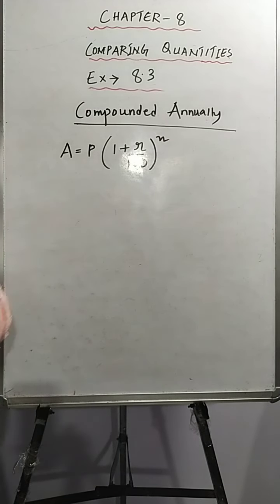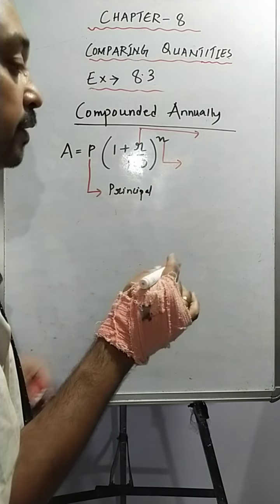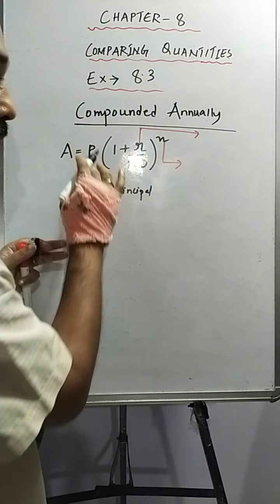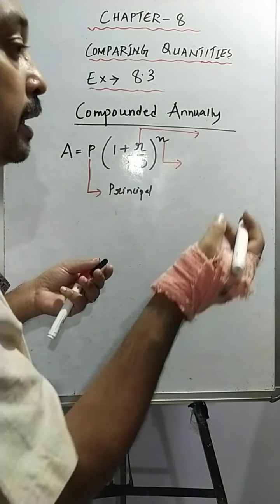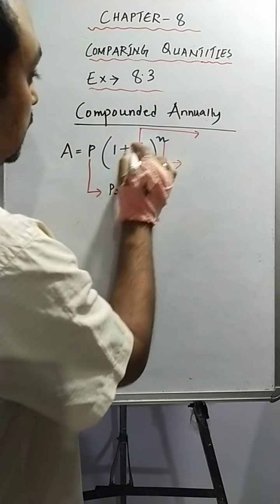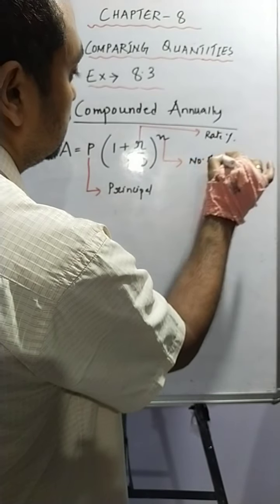Here P is principal, r is rate percent, and n is number of years. Principal is the amount we take as a loan from a bank or from anybody, or money which you deposit anywhere — in both cases that amount will be considered as principal. r is rate percent and n is number of years. This is the formula you apply when 'compounded annually' is written.